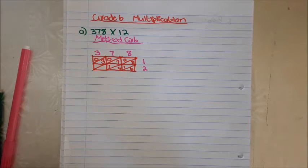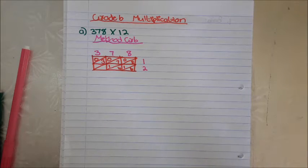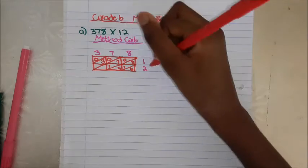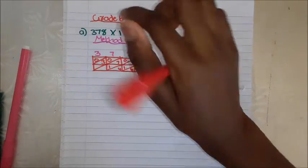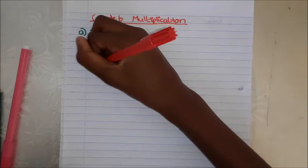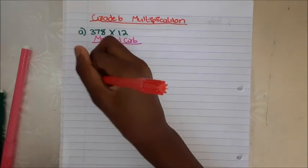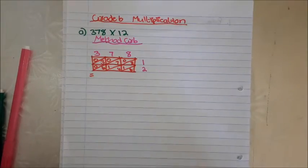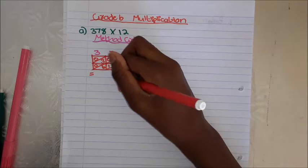Here there's a trick. 3 times 2 is 6, and 6 doesn't have two digits — it only has one. So we write it the same way as the first column: 6 in the bottom and 0 on the top block. Now let's calculate.